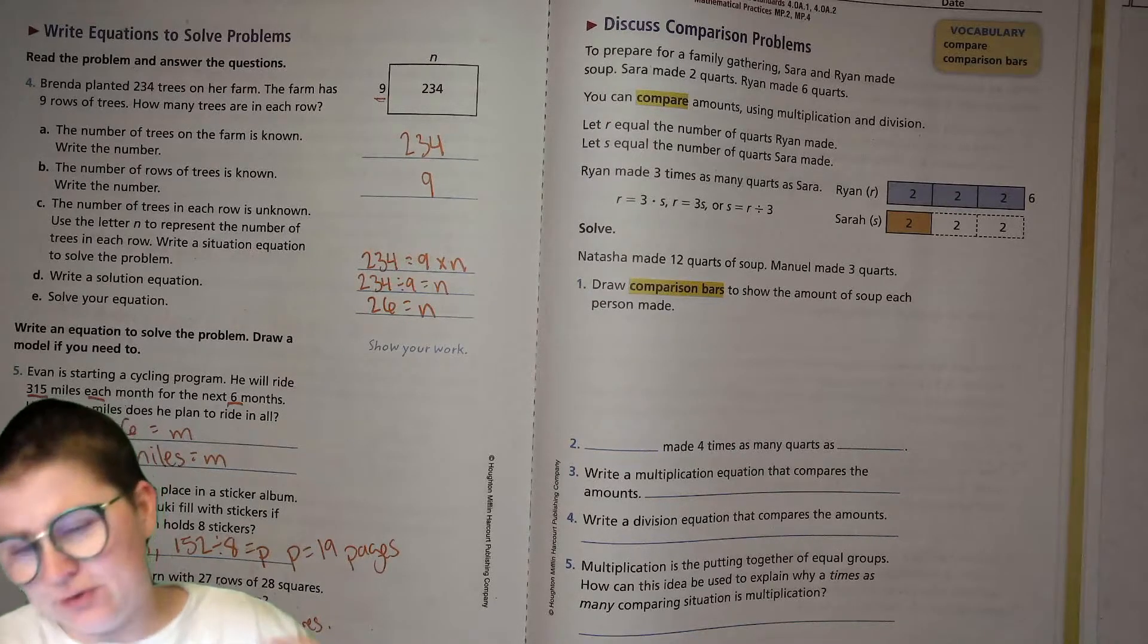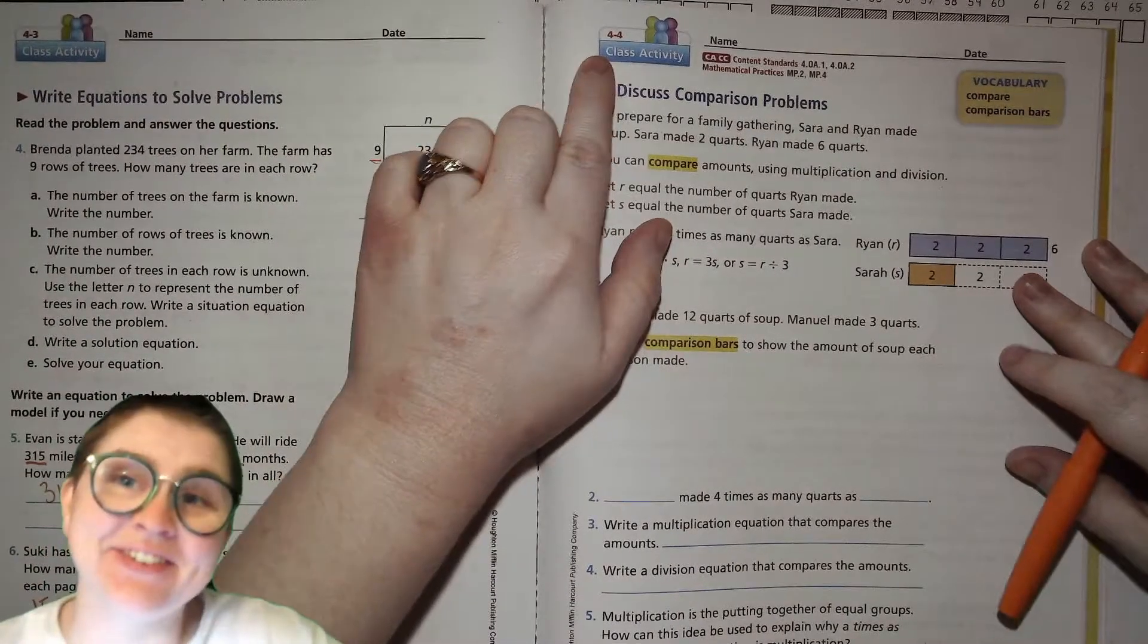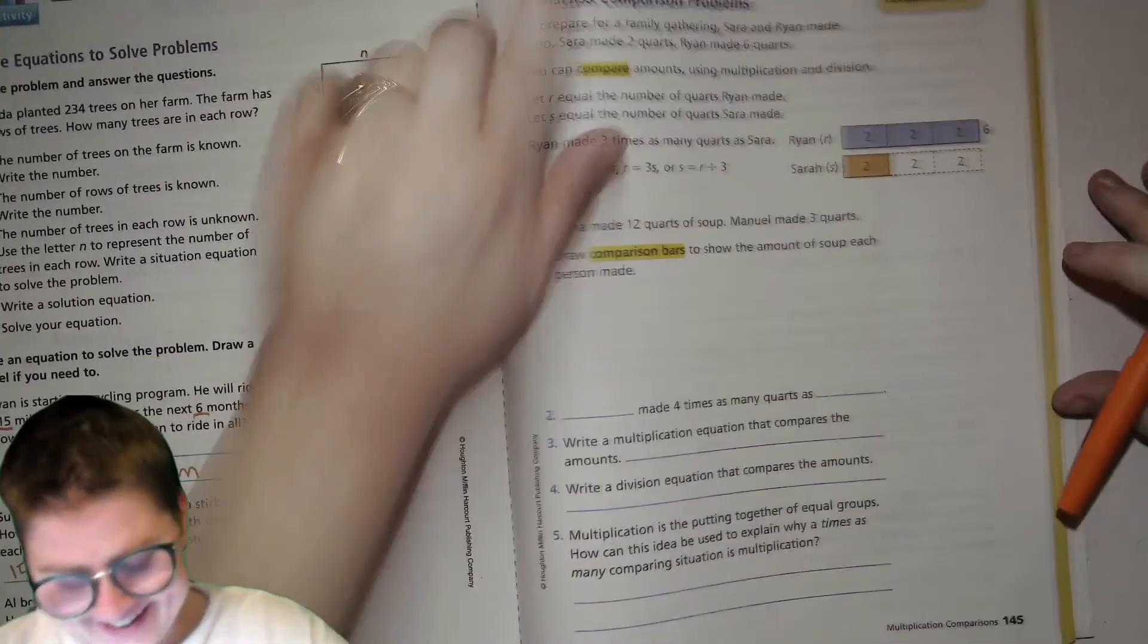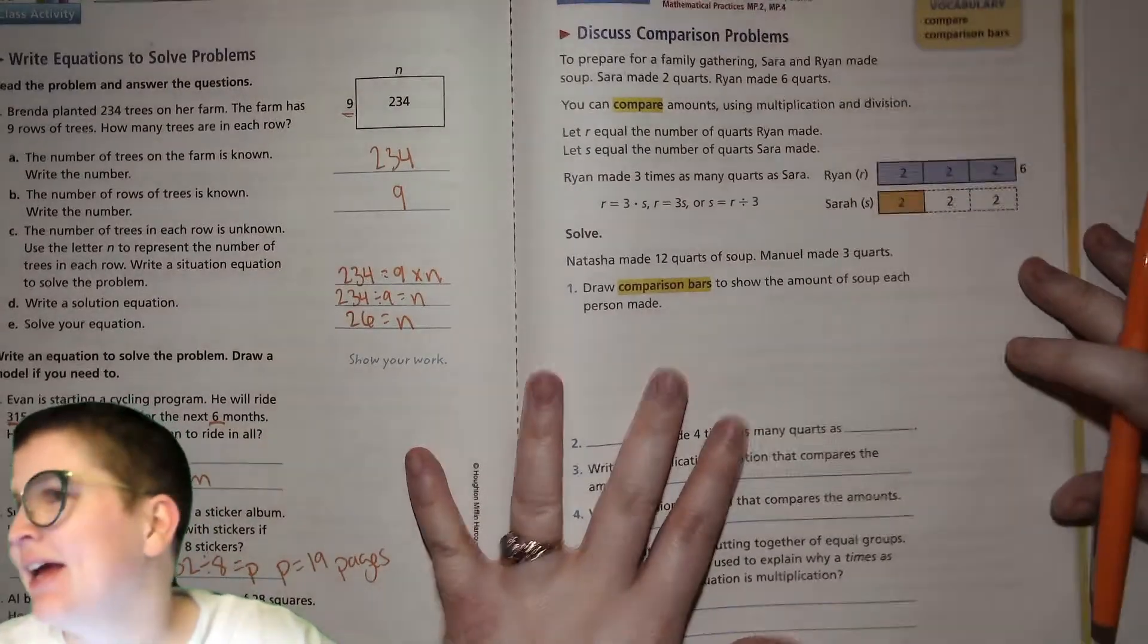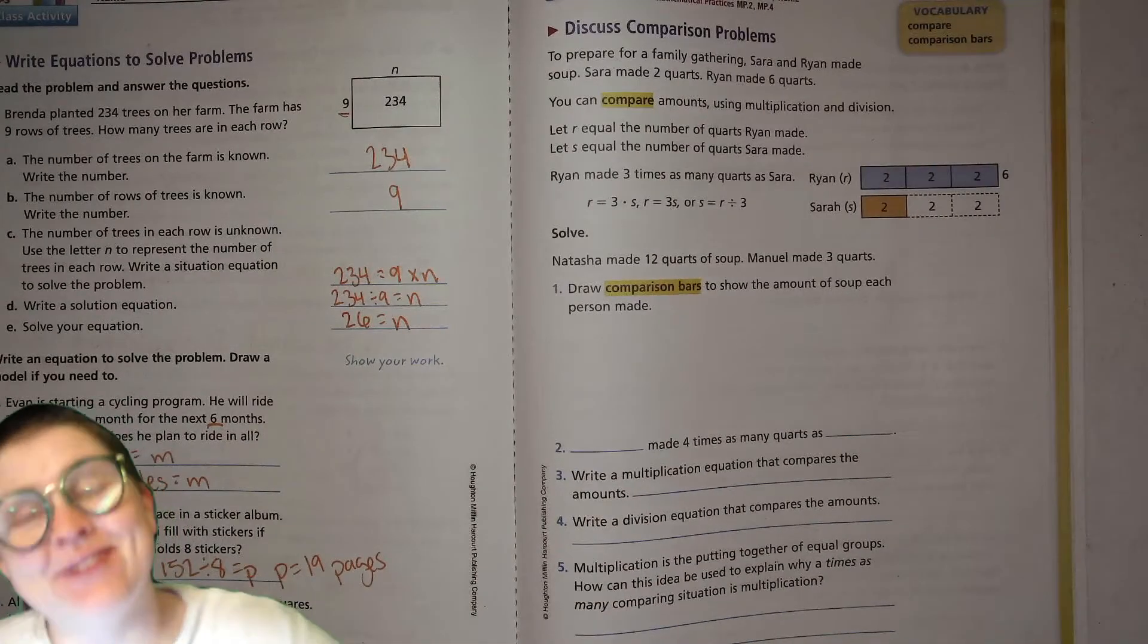Hello, my dear fourth grade friends. Today we are doing unit four lesson four. So four, four, four. And it's on page 145 of our books. So go ahead and grab that and probably your whiteboard. And let's jump in.